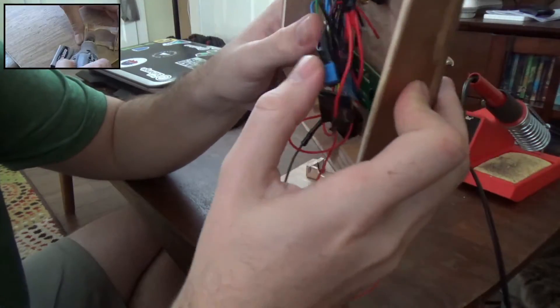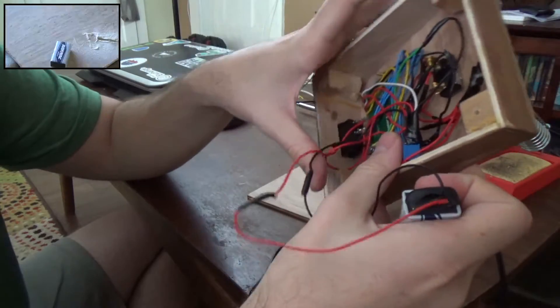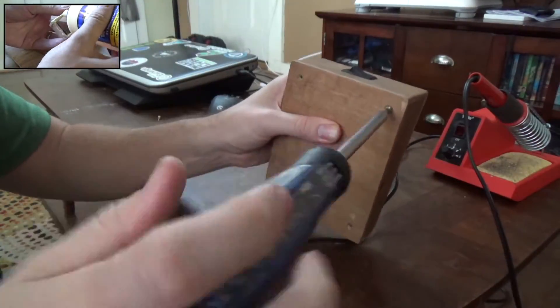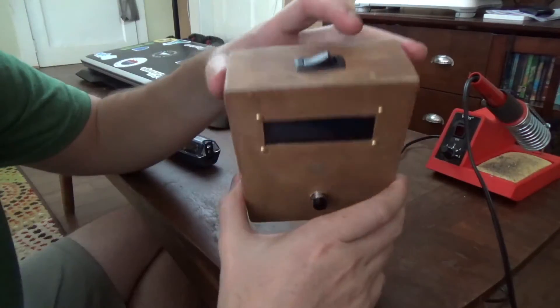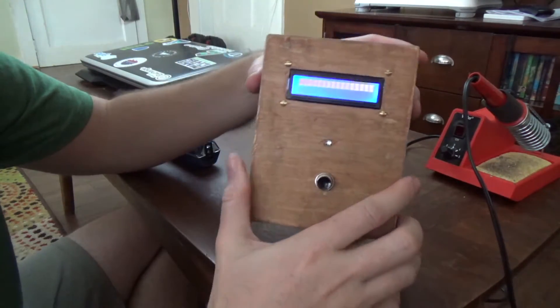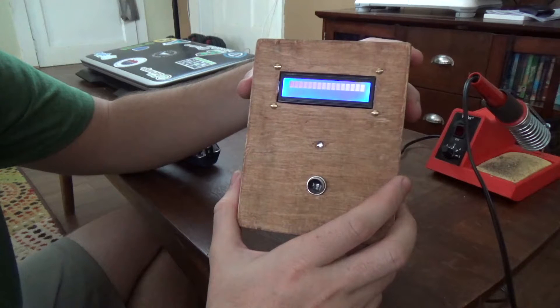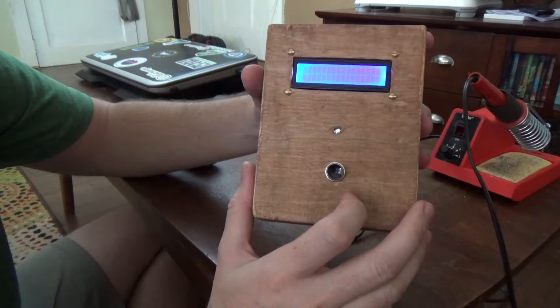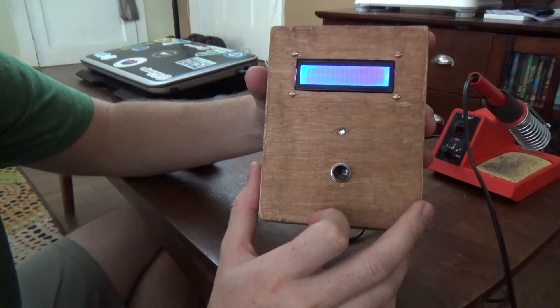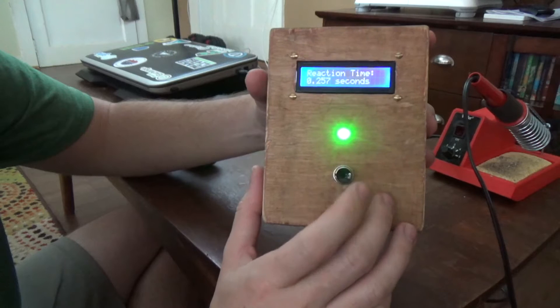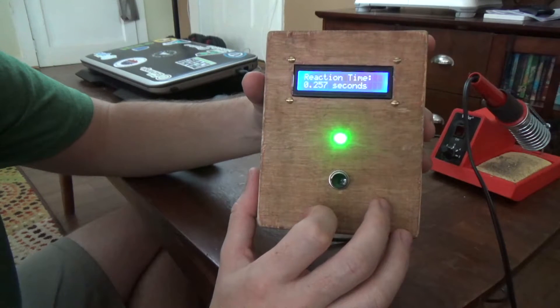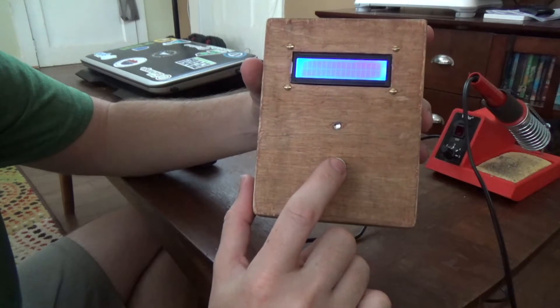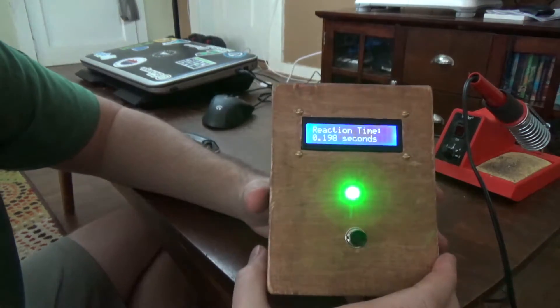If we turn the switch on, the LCD turns on. It gives some time to boot up. It says push button to start. Push the button and when that green light turns on you push the button to see how fast your reaction time is. 0.257 seconds. It'll clear to start again. Let's see how fast I can go. 1.75.